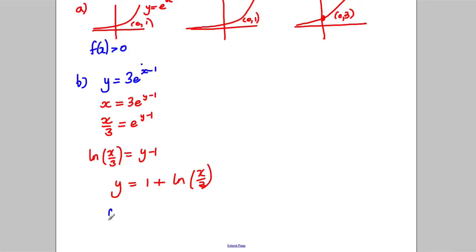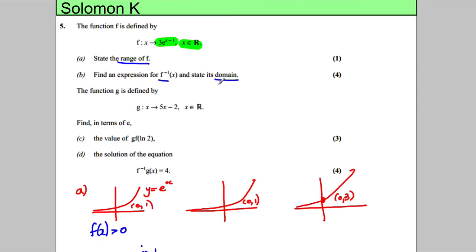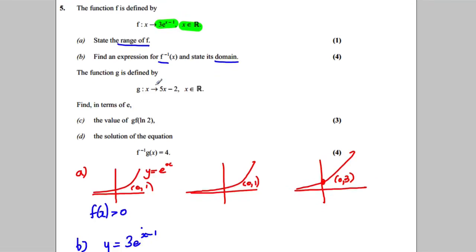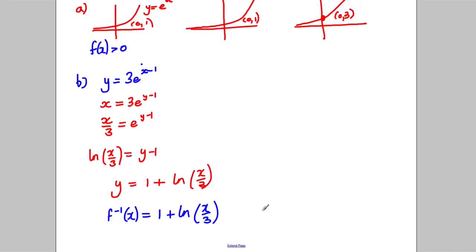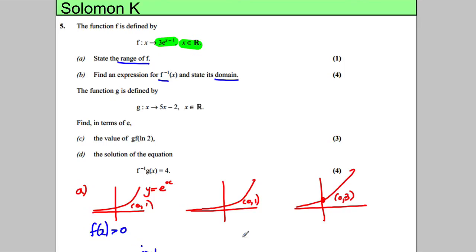So you state your inverse function. The inverse function, therefore, is 1 plus the natural logarithm of x/3. And we know the domain is equal to the range of the original, which we've done in part a, so it's x is a member of the reals, but x must be bigger than 0. And that's that part.